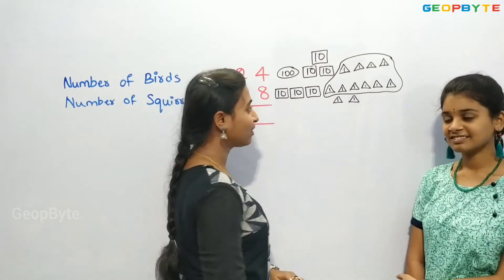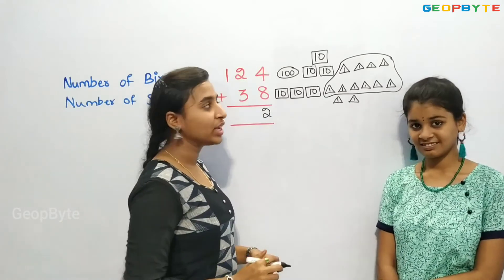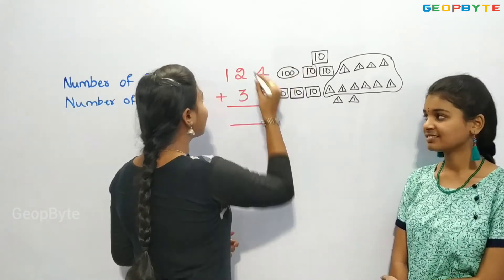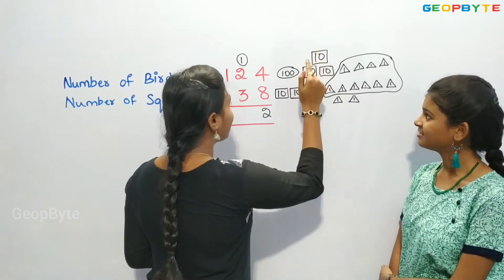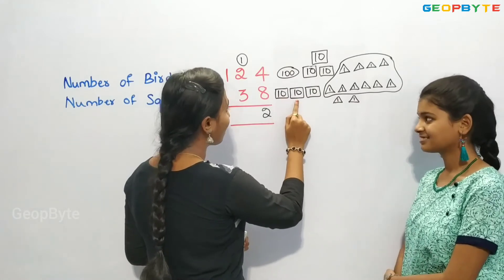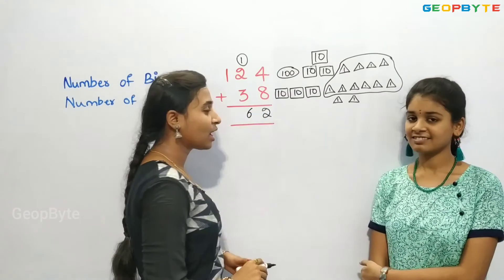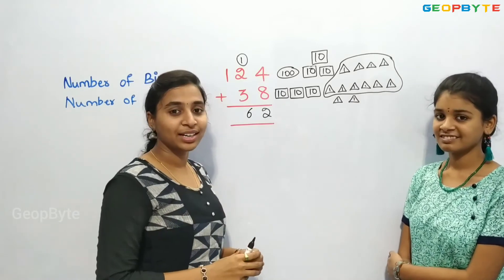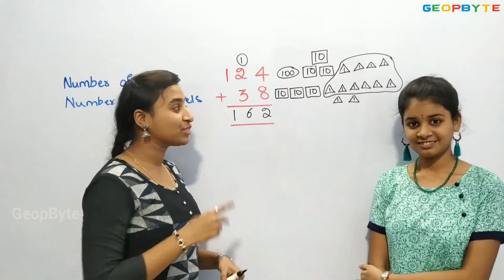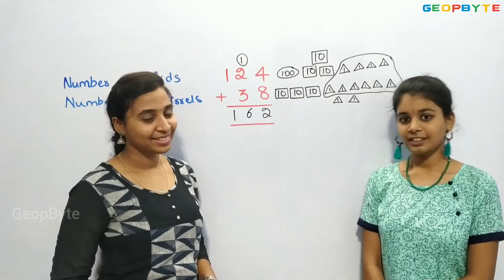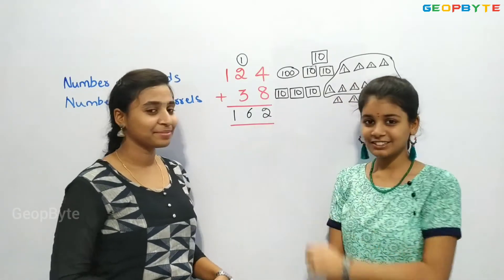How many 1-cards are left? 1, 2 — let us write 2 in the ones place. We got 1 new ten-card. Now let us count how many 10-cards there are: 1, 2, 3, 4, 5, 6 — let us write 6 in the tens place. Let us count the 100-cards: 1 — let us write 1. So we got 162. The total number of squirrels and birds is 162.